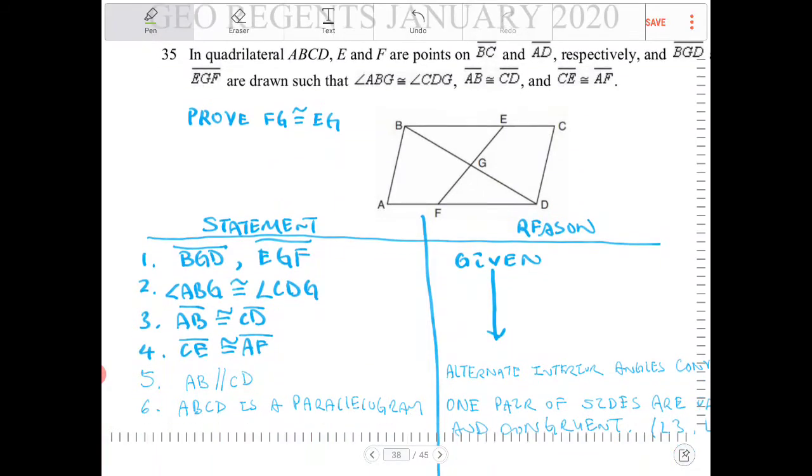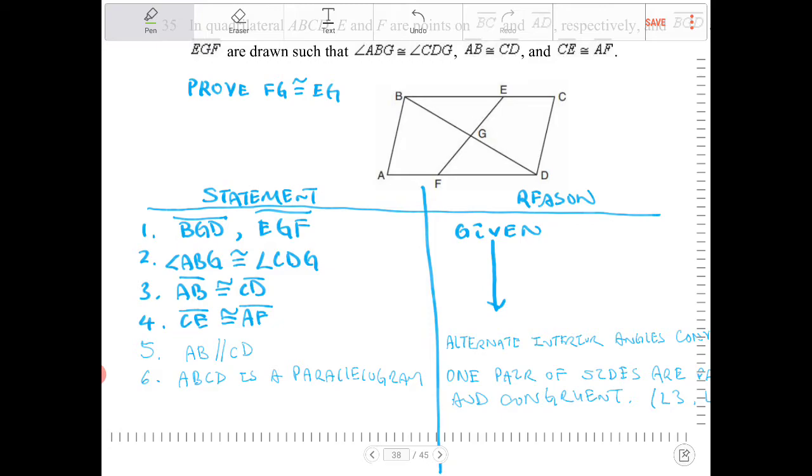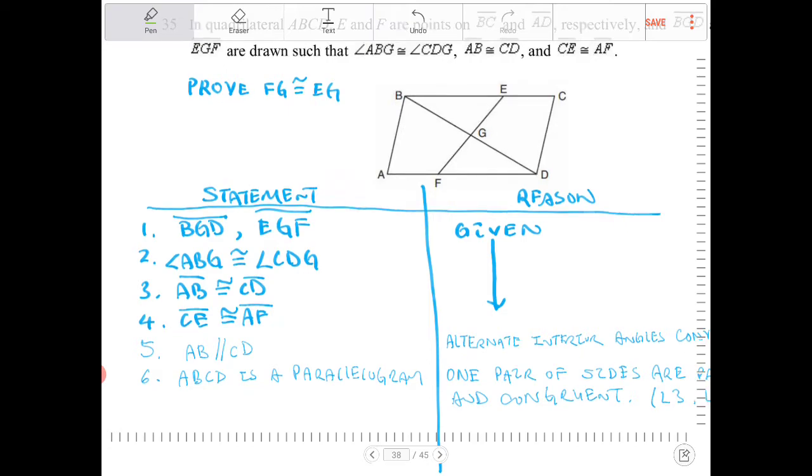How am I going to do that? Well, I know in the problem, in the given, we're told that EC is congruent to AF. And since we know that BC is going to be congruent to AD because opposite sides of a parallelogram are congruent, we can perform a segment addition postulate to prove that BE is congruent to FD. Because we need a side. We need at least one side to prove triangles congruent. You need a minimum of one side. So we're going to prove those two sides are congruent.